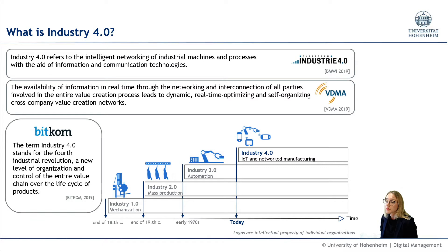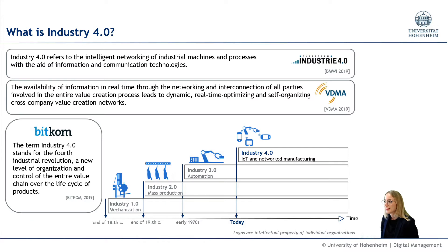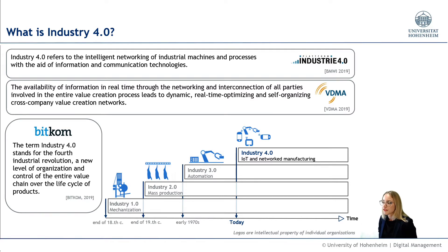Industry 3.0. The third industrial revolution started in the 1970s. The focus here was on further automation through electronics and IT. After the big calculating machines, the personal computer for office and household now found a new branch of industry.